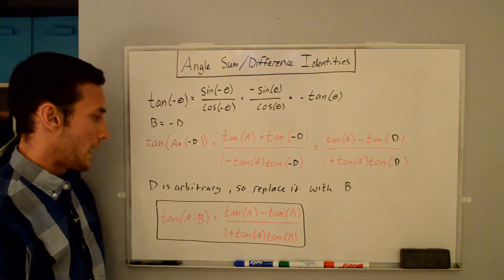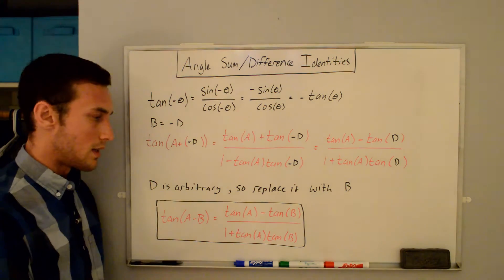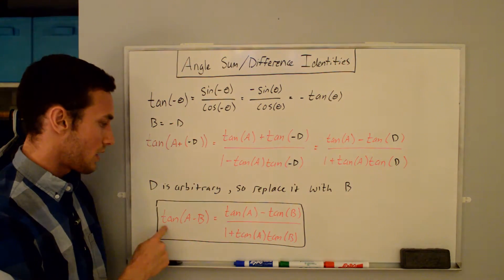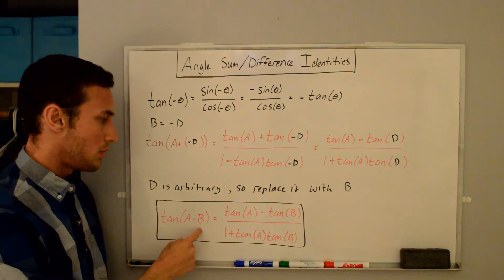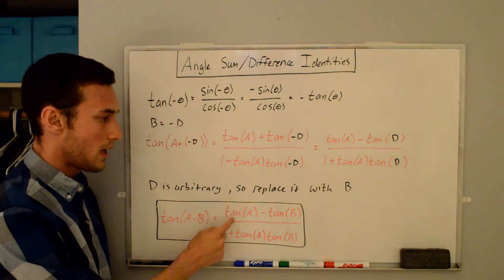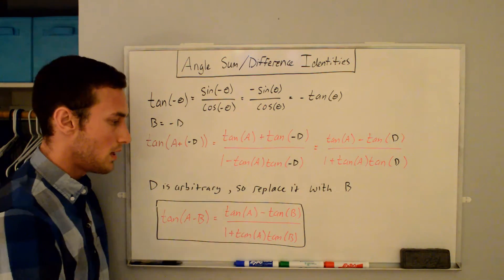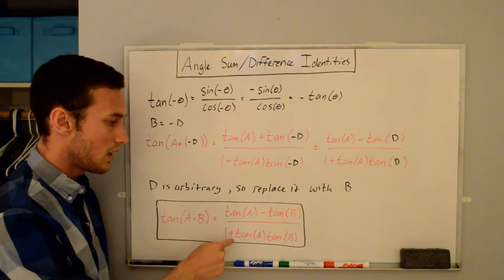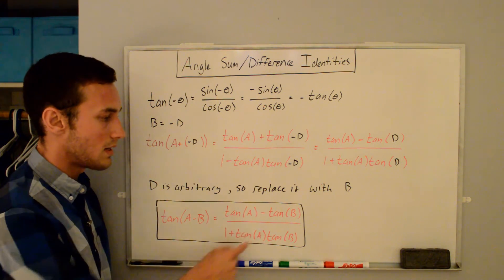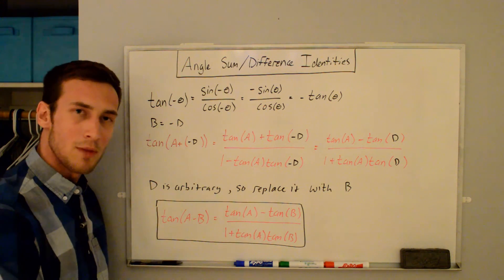And we end up with our final angle difference identity for tangent: tangent of a minus b is equal to tangent of a minus tangent of b over one plus tangent a tangent b. Thanks for watching.